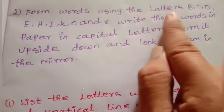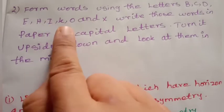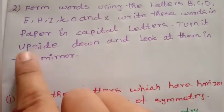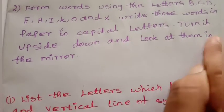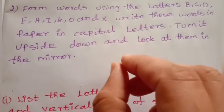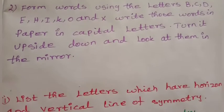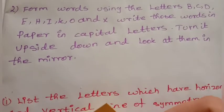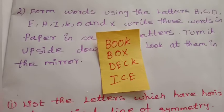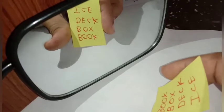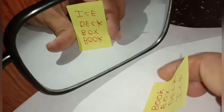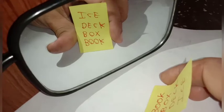Second one: form words using the letters B, C, D, E, H, I, K, O, and X. Write those words on paper in capital letters. Turn it upside down and look at them in the mirror. Let's see how the letters appear in the mirror. The example words are: eyes, dice, box, book.